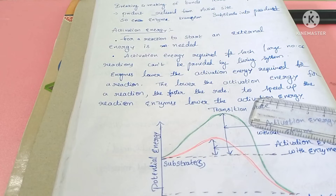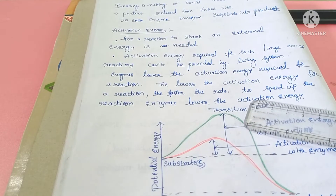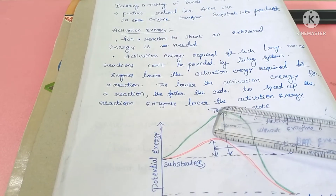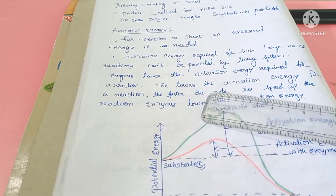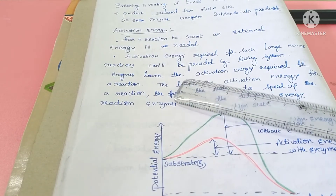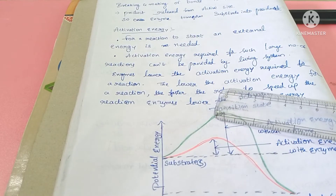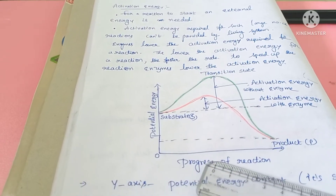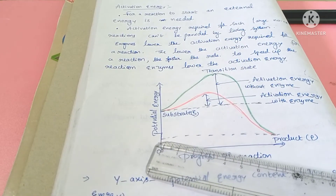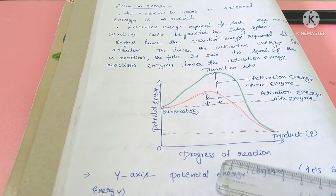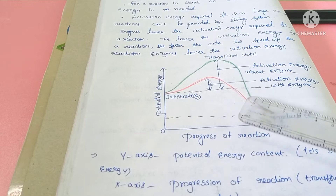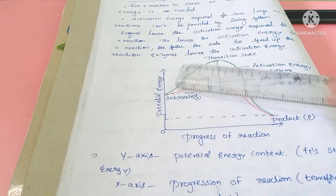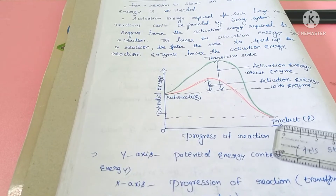The lower the activation energy, the faster the reaction proceeds. As opposed to that, the higher the activation energy, the slower the rate of reaction. Now we will look at the graph. On the x-axis, we have the progress of reaction, and on the y-axis is the potential energy. Potential energy means stored energy. Progress of reaction means the transformation of the substrate into the product. Here we have the substrate and the product, each at one energy level.